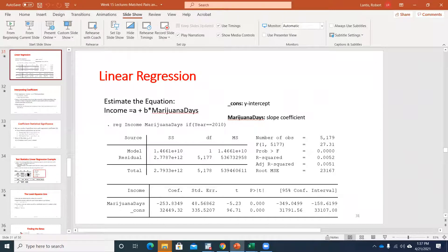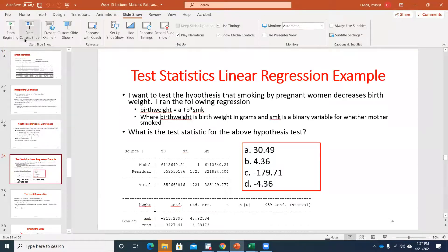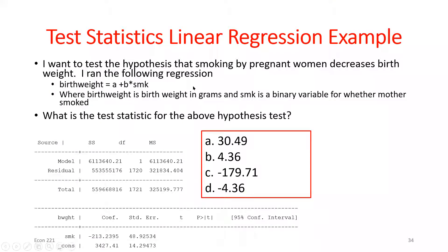The Excel output and Stata output look a little bit different but give the same information. Any output I use on the exam will look like either the Excel output or the Stata-style output I've been showing. Now let's go through one more example: predicting birth weight using a variable of whether or not the mother smoked while pregnant — what we call a dummy or indicator variable. It's basically only ever a one or a zero: one if the mother smoked while pregnant, zero if not.